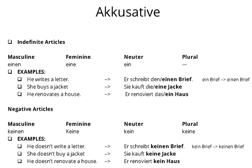She buys a jacket — 'Sie kauft eine Jacke.' You see that for a feminine noun there will be an 'e' at the end, whether it is the definite article 'die' or the indefinite article 'eine.' He renovates a house — here because it is a neuter noun we use 'ein,' and you see that it does not have any extension — no 'en' or 'e' at the end — and the same is true for the definite article.